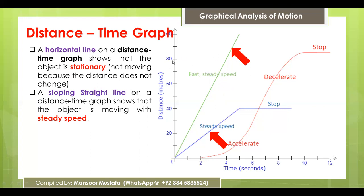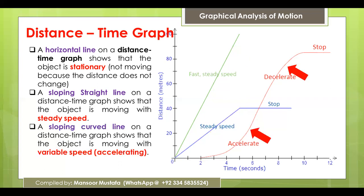Comparatively, if the slope is steeper, it means the object is moving at a faster speed. A curve in the graph represents the object moving at a variable speed — an increasing curve means speed is increasing, meaning the object is accelerating, and a decreasing curve means the speed of the object is decreasing.